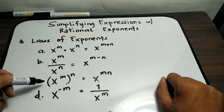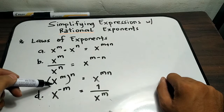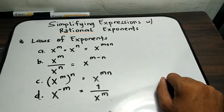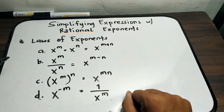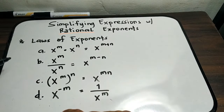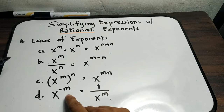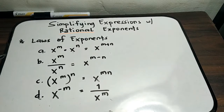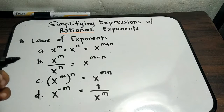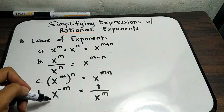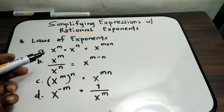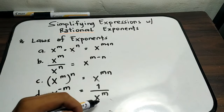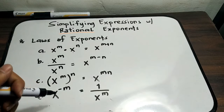For the third law, we have the power of powers: x raised to m, raised to n. All you need to do is simply multiply the exponents. And for the negative exponent law, x raised to negative m — to make the exponent positive, all you need to do is change the position of your expression from numerator to denominator. So the answer is 1 all over x raised to m.